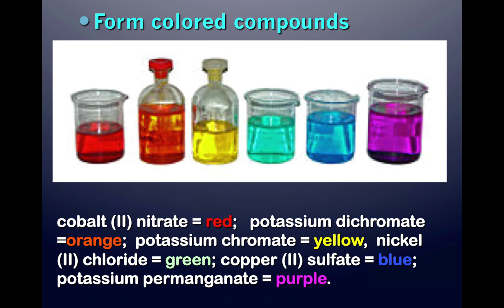Transition elements are interesting because they form colored compounds. For example, a blue solution in the lab most likely contains copper. Green solutions tend to have nickel in them, and chromium compounds can be either orange or yellow.